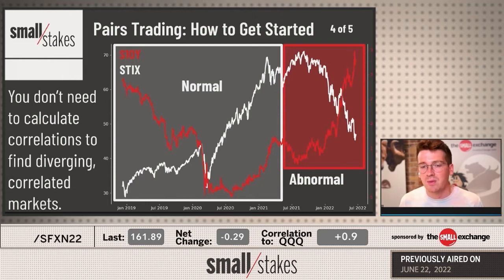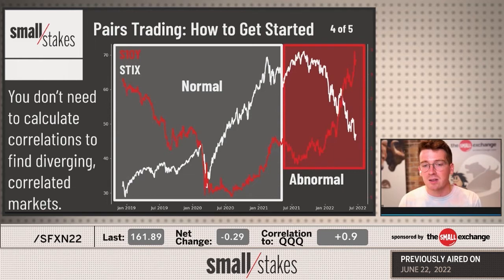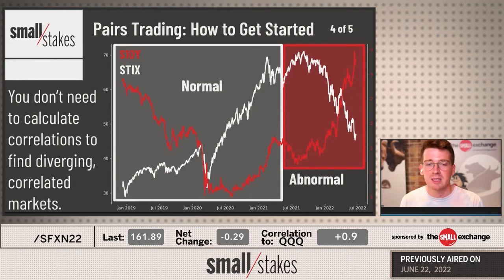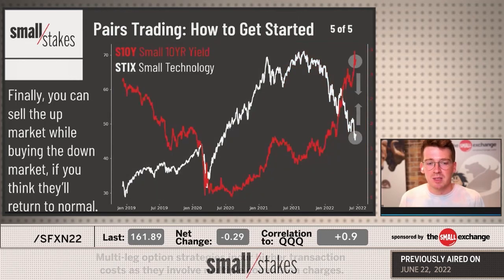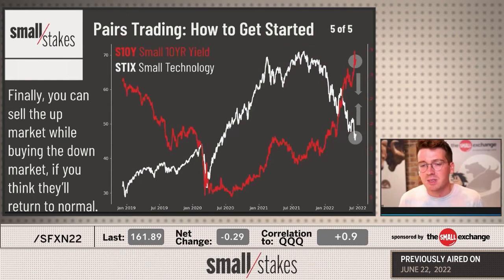All you have to do in your platform is look through related markets. For example, browse all the airline stocks for a pairs trading opportunity — AAL, UAL, LUV — in your charting package, comparing year-to-date, the last month, or the last two years. See if one is greatly outperforming the other. Then the last step is simply setting up the trade: buy the down market, sell the up market, hoping for them to come back in line.